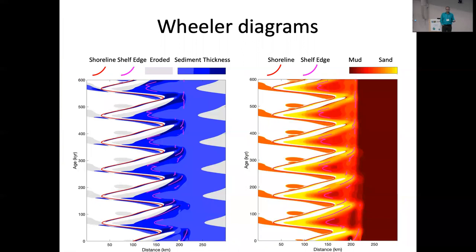I can also produce Wheeler diagrams. So this is looking at distance versus time, and the blue is showing you where there are sediments that are being produced, with the darker colors being the thicker sediments, and the gray representing sediments that were deposited and then were subsequently eroded. And the one on the right is similar, but unlike the older version, we have now a very simple but working two lithologies. So we just have sand and mud producing a fairly simple variation in lithology across the model.